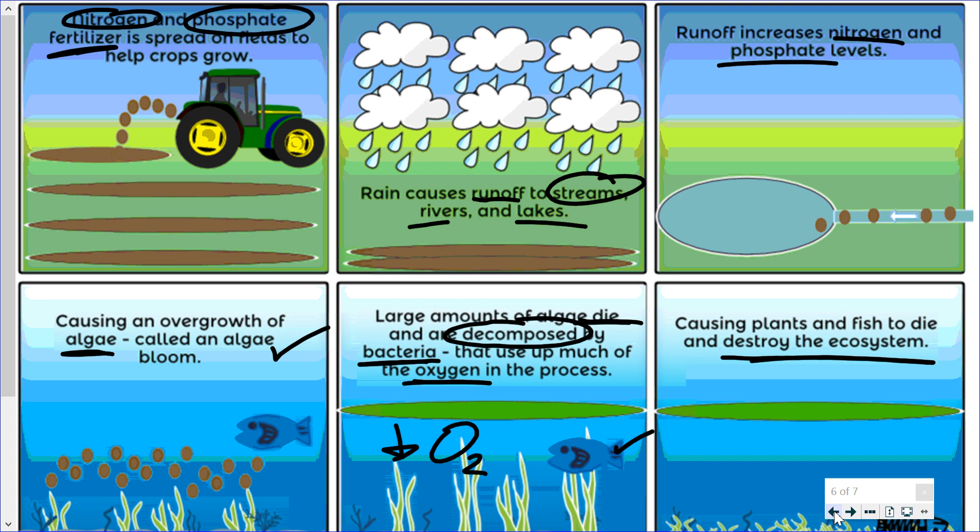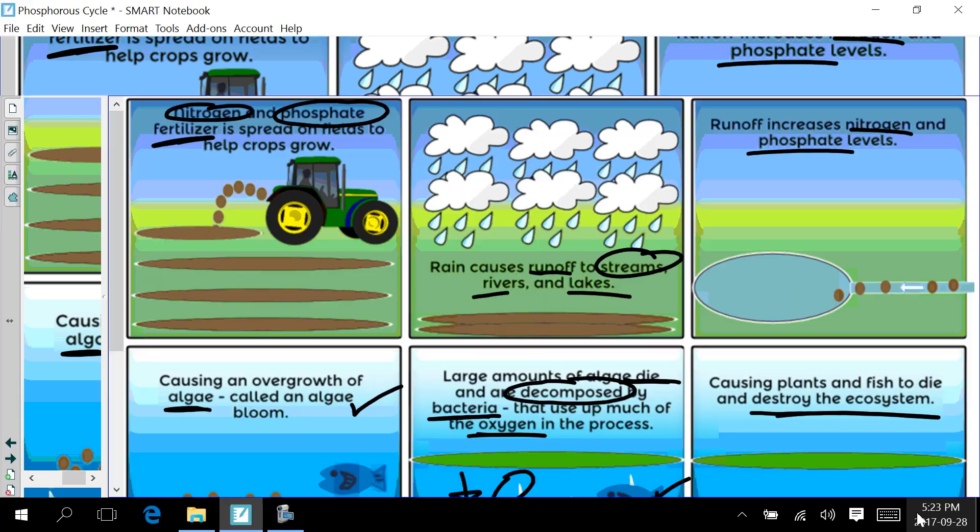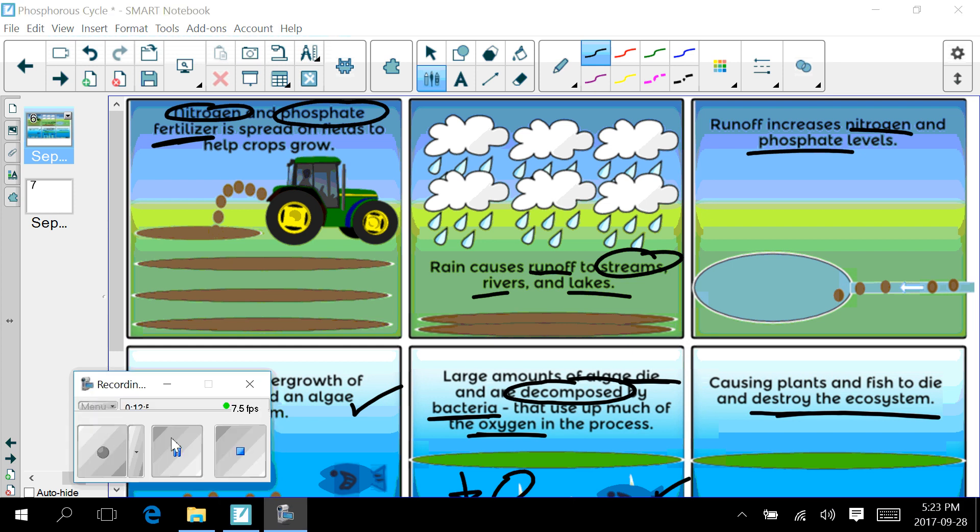So now we have covered the different aspects of the phosphorus cycle: the cycling process mostly through the hydrosphere, lithosphere, and biological organisms; the major reservoir, the lithosphere; the various chemical forms; key processes like decomposition and weathering; and the major human impact — fertilizer and sewage runoff — which leads to algal blooms and the eventual death of organisms like fish.